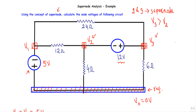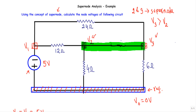Since node two and node three form the super node, I will remove this independent voltage source and replace it with a short circuit. After removing the voltage source, node number two and node number three are connected with a short circuit forming the super node. The green shaded area indicates the super node in this circuit. I will now apply KCL at the super node.